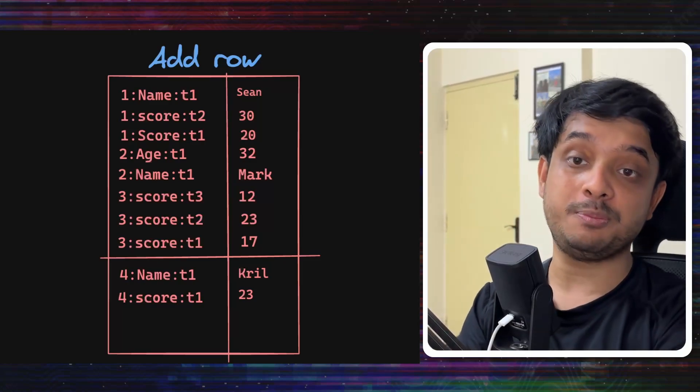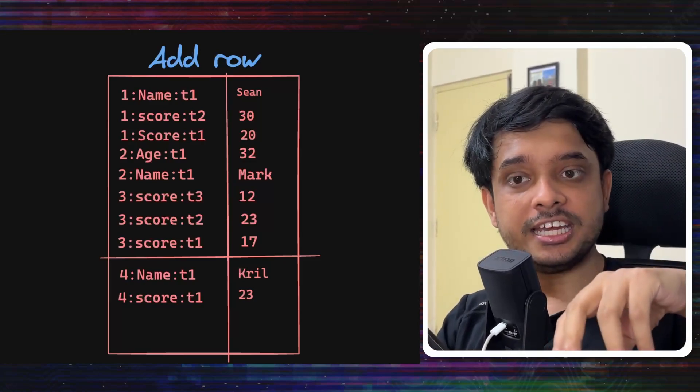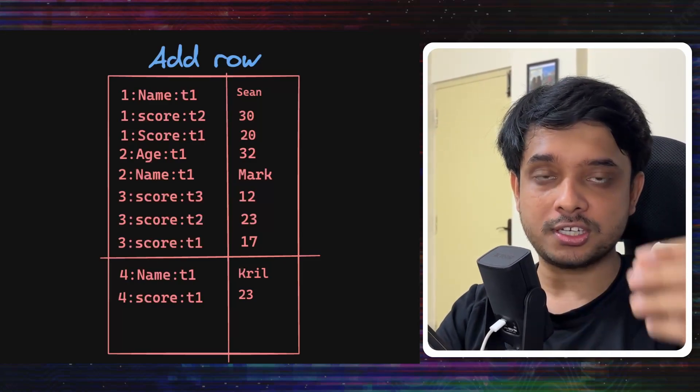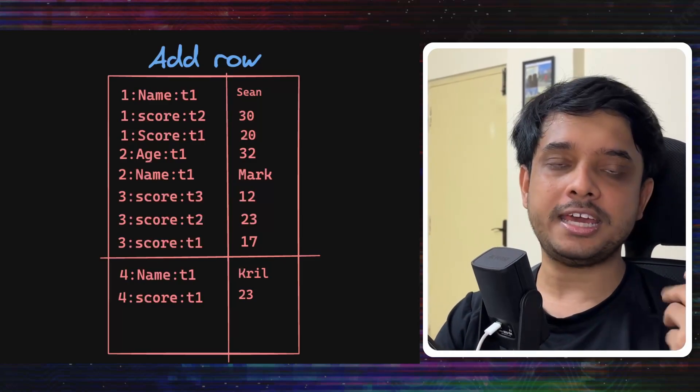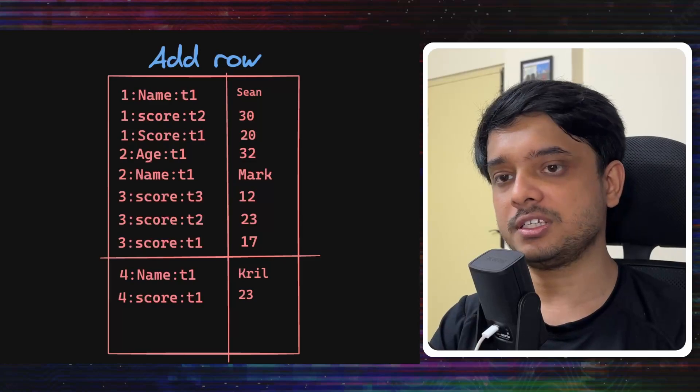Adding a row with some values would also be pretty simple. We would just create keys for the values that will be entered. We know how to create keys for the values given to us and RocksDB would take care of properly sorting this data and storing this data.